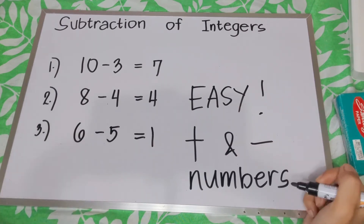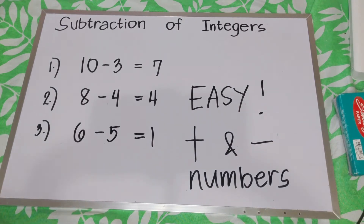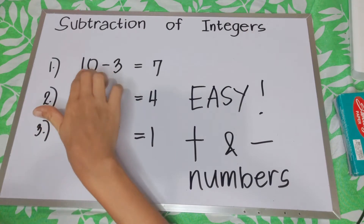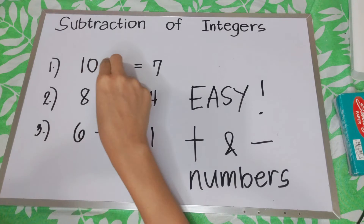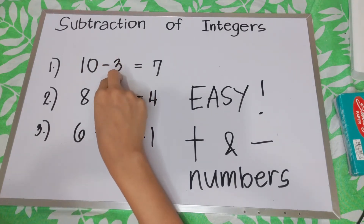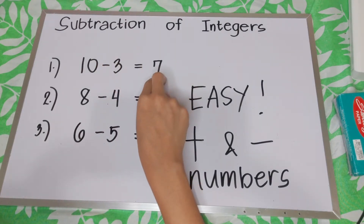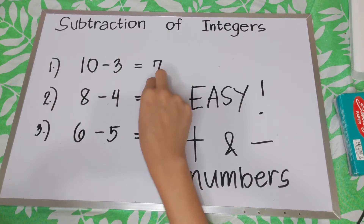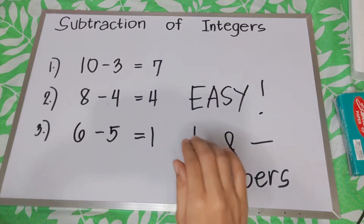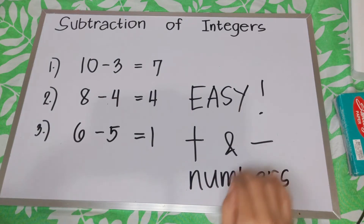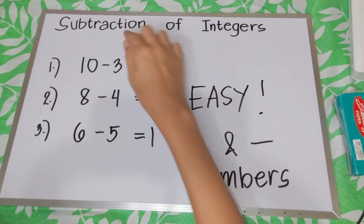First and foremost, you must know that when you are subtracting both positive numbers and the minuend is greater than the subtrahend, then the answer is positive. So let us now give examples of having positive and negative numbers in subtraction.